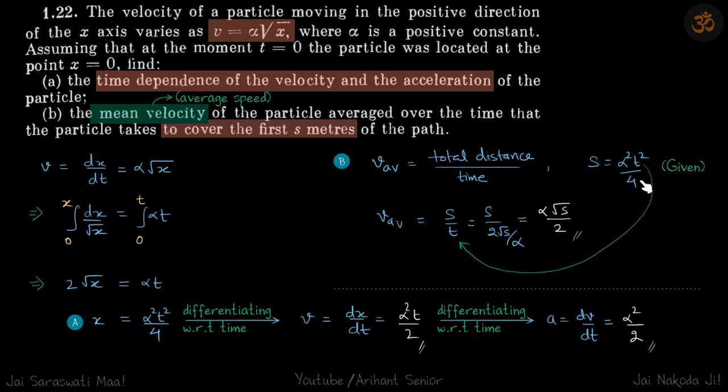We got from here, divide by time. Actually, my bad, s is given in the question because we need to find the average speed during the first s meters. So s is given, time is not given. In s by t, we'll use s as it is and time we will put in terms of s.